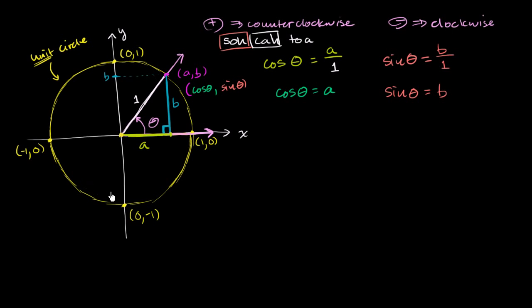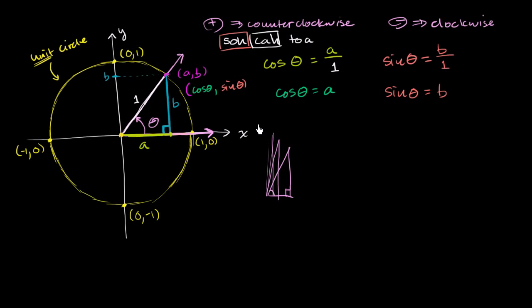Can we use this to extend SOH CAH TOA? Because SOH CAH TOA has a problem — it works fine if our angle is greater than 0 degrees and less than 90 degrees, since we can always make it part of a right triangle. But SOH CAH TOA starts to break down as our angle is 0, or even becomes negative, or as our angle is 90 degrees or more. You can't have a right triangle with two 90-degree angles in it — it all starts to break down, and especially what happens when we go beyond 90 degrees.